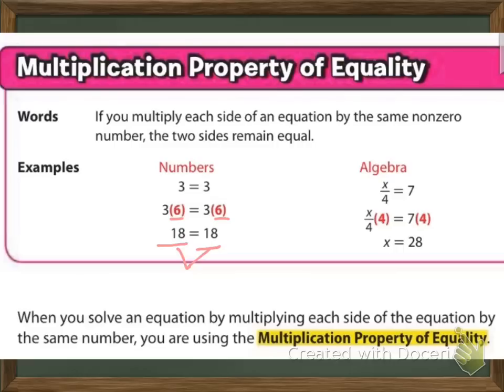So over here in the algebra side, if we are multiplying times 4 on this side, we have to do it on the other side to keep it balanced. And when we do that, we're actually getting rid of the 4 that was being divided into x, and we have multiplied it to the other side, the inverse operation. We multiply both sides by 4, and we get x equals 28. And don't forget, we can always check our work by saying 28 divided by 4 equals 7, check mark. When you solve an equation by multiplying each side of the equation by the same number, you're using the multiplication property of equality.